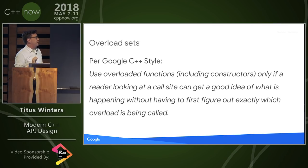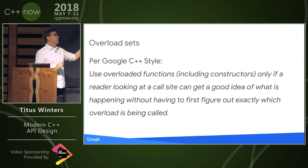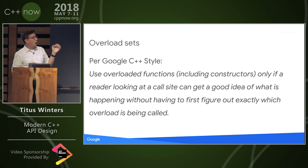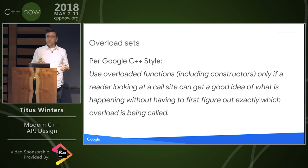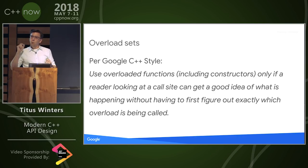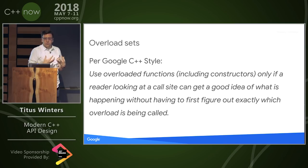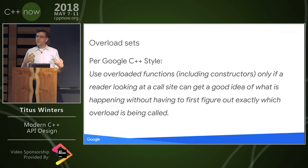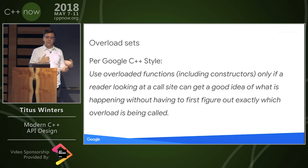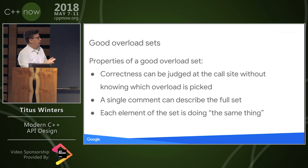The Google C++ style guide says: use overloaded functions, including constructors, only if a reader looking at a call site can get a good idea of what is going on without having to figure out which member of the set is chosen. In both of these cases, what we're saying is the semantics of the functions that make up the set should be the same — without trying to come up with a fuzzy way of saying that.